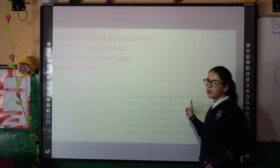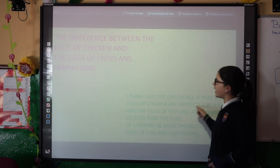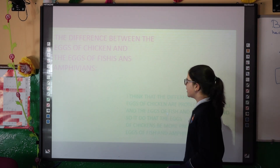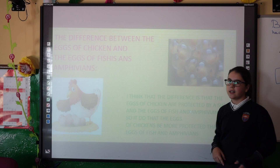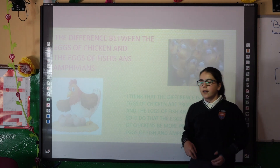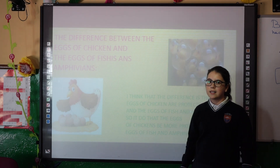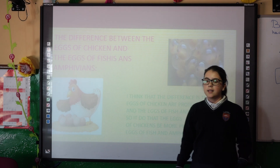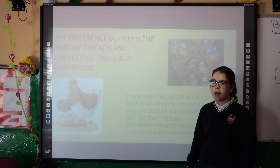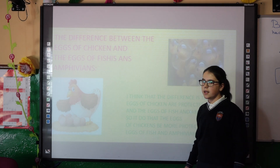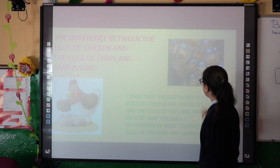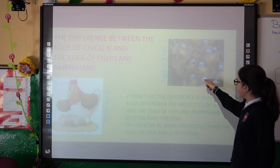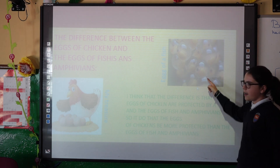Do you know the difference between an air of chicken and an air of fish and amphibians? The difference is that the air of chicken have the cells, and the air of fish and amphibians do not. So the air of chicken are more protected than the air of fish and amphibians. In your cell, the air of fish, you can see that only are protected by a membrane.